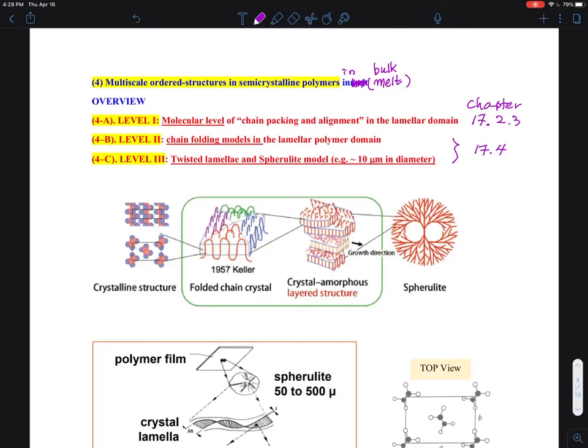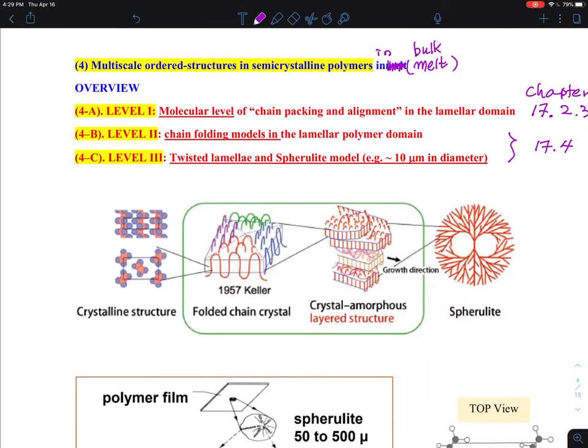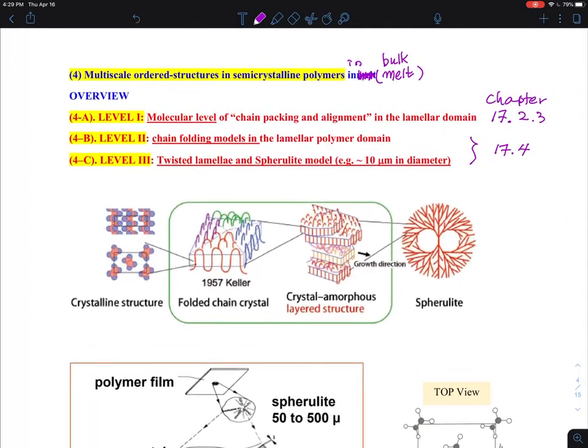Okay, so I'm going to section 4, and this is what I call the multi-scale ordered structures in semi-crystalline polymers. This is spanning through multiple pages and will be really the heart of the semi-crystalline polymer in terms of structural understanding.